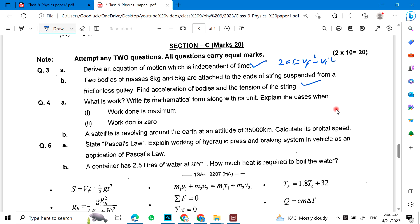What is work? What is its mathematical form along with its units? Explain the cases when work is maximum and work is zero. So, a satellite is revolving around the earth at an altitude of this. Calculate its orbital speed.